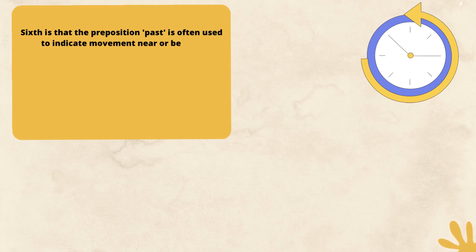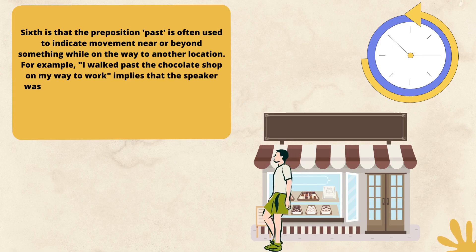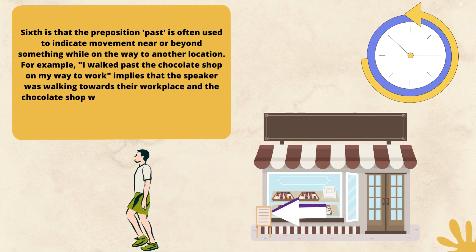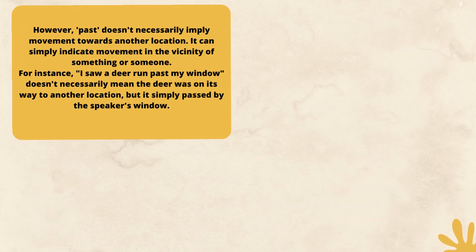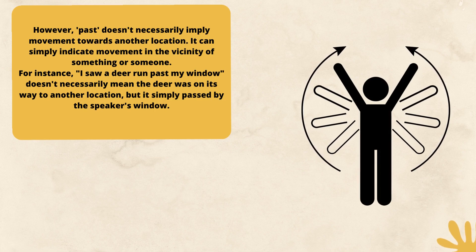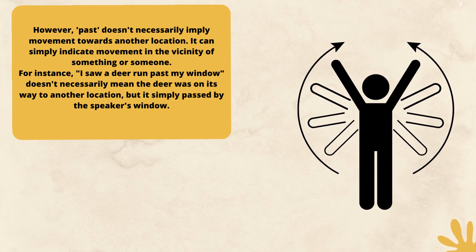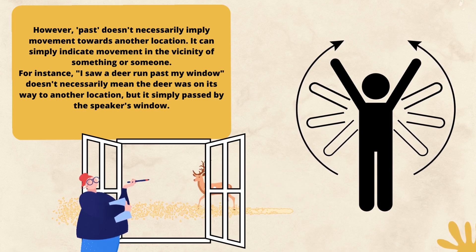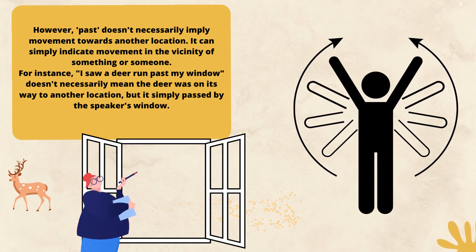Sixth, the preposition 'past' is often used to indicate movement near or beyond something while on the way to another location. For example: I walked past the chocolate shop on my way to work, which implies that the speaker was walking towards their workplace and the chocolate shop was nearby or adjacent to their route. However, 'past' doesn't necessarily imply movement towards another location — it can simply indicate movement in the vicinity of something. For instance: I saw a deer run past my window doesn't mean the deer was on its way somewhere; it simply passed by the speaker's window.